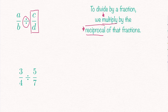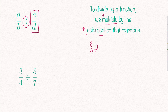Now what is a reciprocal? Reciprocal of a fraction simply means you need to inverse it. So for example, if I have 2 over 3, the reciprocal of 2 over 3 means I have to inverse it — make it go upside down — so that will become 3 over 2. So the reciprocal of 2 over 3 is equal to 3 over 2.